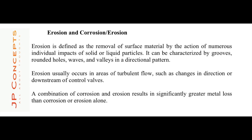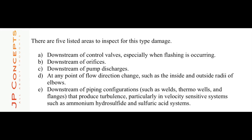Erosion and erosion-corrosion are mainly caused by fluid velocity. Erosion is defined as the removal of surface material by the action of numerous individual impacts of solid or liquid particles, and can be characterized by grooves, rounded holes, and waves. Erosion usually occurs in areas of turbulent flow such as changes in direction or downstream of control valves. A combination of corrosion and erosion results in significantly greater metal loss. Five areas to inspect for erosion are: downstream of control valves, downstream of orifices, downstream of pump discharge, at any point of flow direction change such as elbows, and downstream of piping configurations such as thermowells that produce turbulence — particularly in velocity-sensitive systems such as ammonium hydrosulfide and sulfuric acid systems.